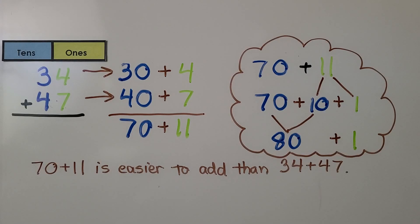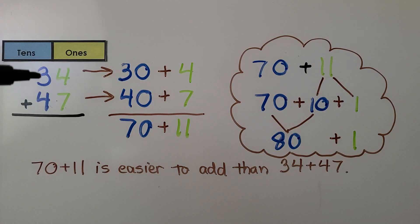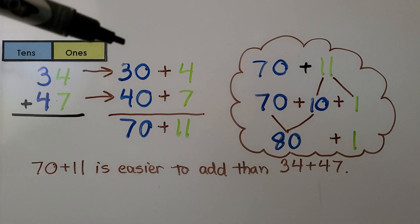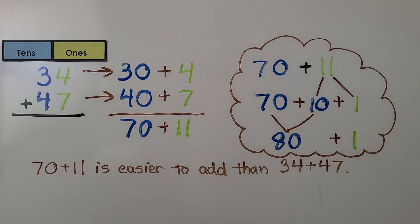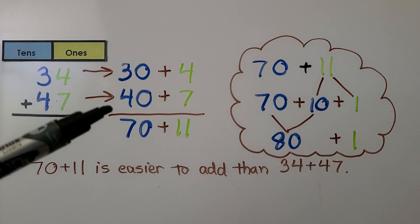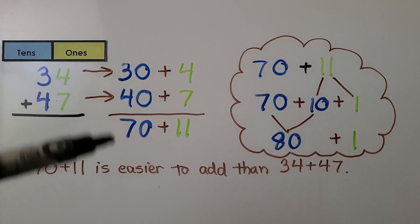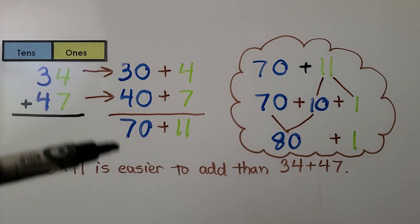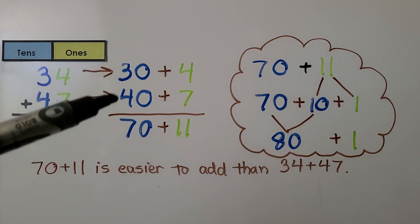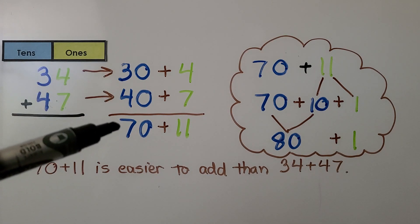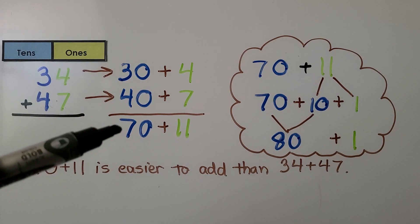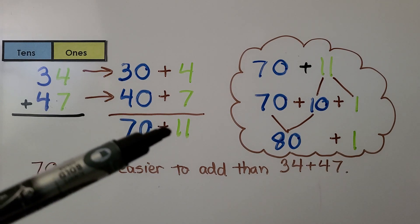Here we have 34 plus 47. 34 can be written as 30 plus 4, and 47 can be written as 40 plus 7. We add the tens: 30 plus 40 is equal to 70. We add the ones: 4 plus 7 is equal to 11.